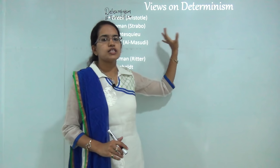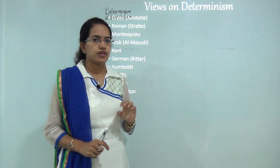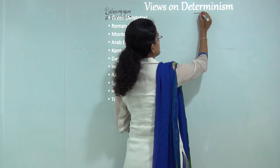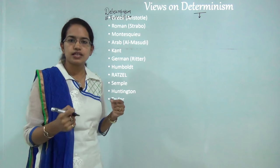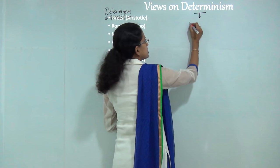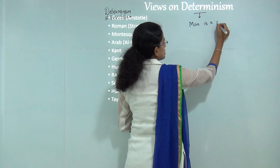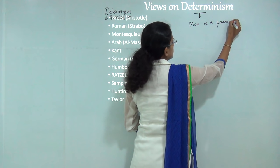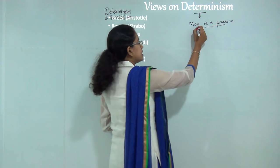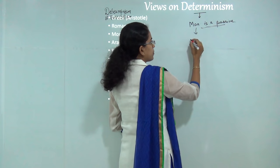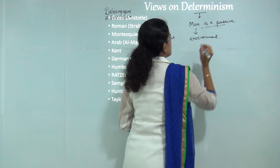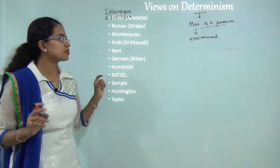There are various views by various scholars laid forward for deterministic thinking. In very simple terms, determinism is something that is determined for us, as the name suggests — man is a passive agent. That means man does not have many things under his control and is mostly controlled by the environment or his surroundings. That is the main key concept of determinism.